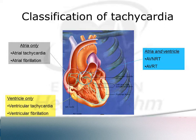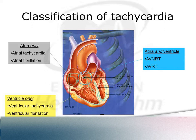The teaching of arrhythmia, particularly to medical students, is very complicated. This is how I simplify when teaching junior doctors and medical students. Basically, there are only two types of tachycardia: the regular ones, which are the tachycardias, and the irregular ones, which are the fibrillations.